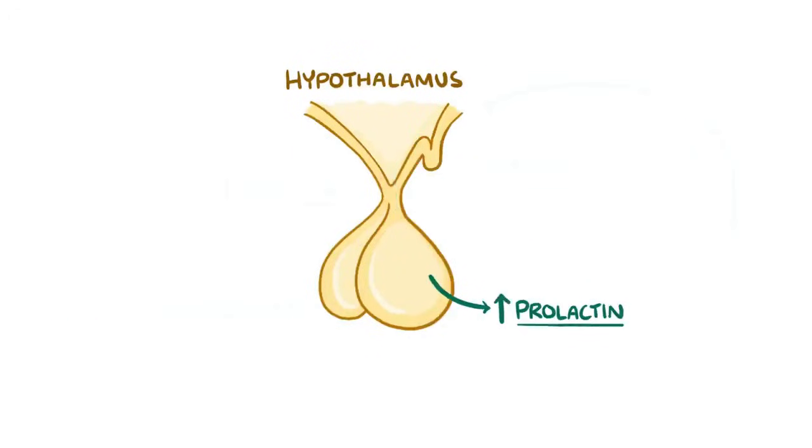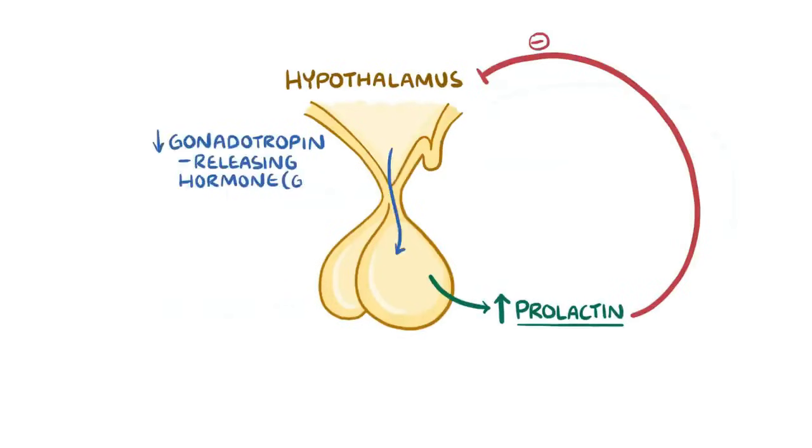High levels of prolactin can also signal the hypothalamus to decrease the secretion of gonadotropin-releasing hormone, or GNRH. Gonadotropin-releasing hormone acts on the anterior pituitary to make follicle-stimulating hormone and luteinizing hormone, or FSH and LH.